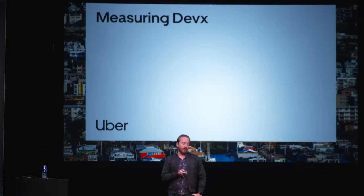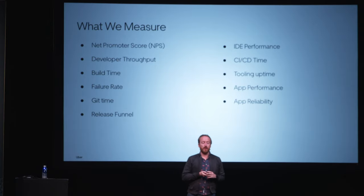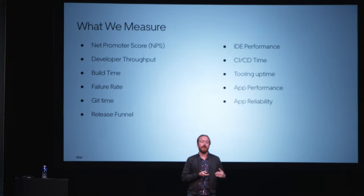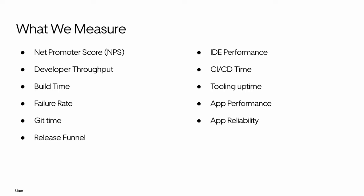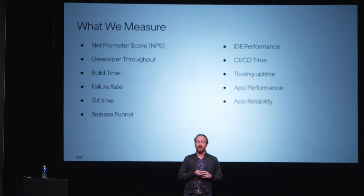Let's talk about how we think about measuring this. We're an org serving 400 to 500 Android engineers, and we need leadership buy-in with things we can measure. We have a lot of different things we measure. We've heard about NPS or Net Promoter Score — that's definitely important to us. We do regular developer surveys. We measure overall developer throughput in aggregate, build times, failure rate, Git performance time, the overall release funnel time, delays, IDE performance — metrics for indexing, code analysis time, file opening time — CI/CD uptime, and then app things themselves like reliability and performance.